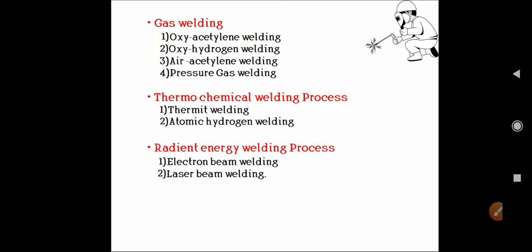Other types include gas welding methods, which are sub-categorized based on the type of fuel: oxy-acetylene welding, oxy-hydrogen welding, air-acetylene welding, and pressure gas welding. Thermochemical welding processes are classified into thermite welding and atomic hydrogen welding. Lastly, radiant energy welding methods include electron beam welding and laser beam welding.